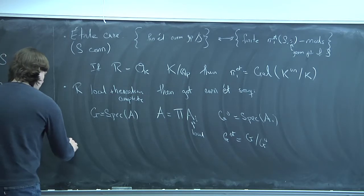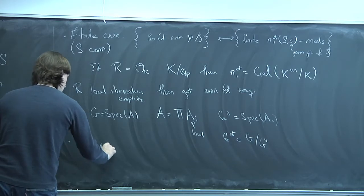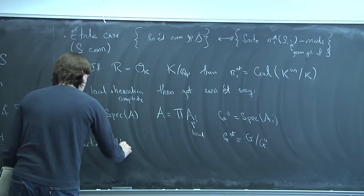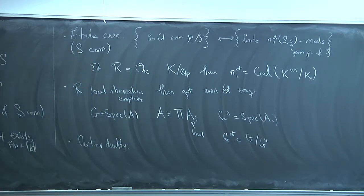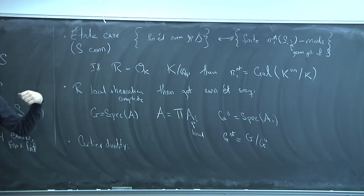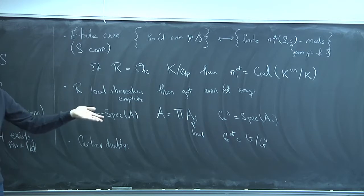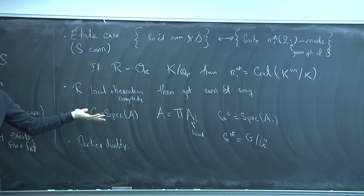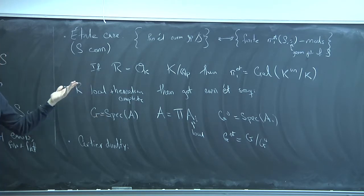Cartier duality works. That shouldn't be surprising — everything we said was pretty formal. The way Cartier duality works is by taking the R-linear dual of A. If we're dealing with projective modules, doing the R-linear dual operation is contravariant and respects tensor products. We were working over a field to figure out everything about Cartier duality, and all of that holds true here.